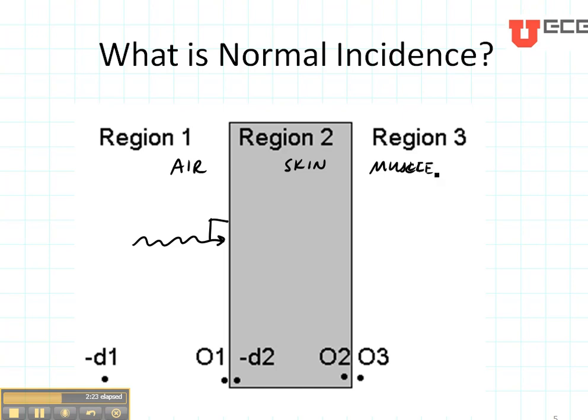So if we wanted to analyze the plane wave transmission and reflection through the skin and muscle, we would use a plane wave at normal incidence. So here is the electric field, let's say, and the magnetic field would be coming out like this.